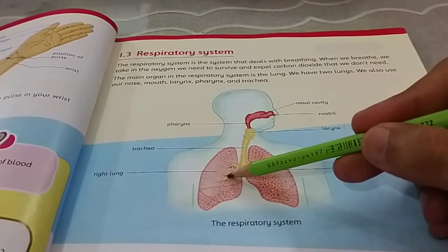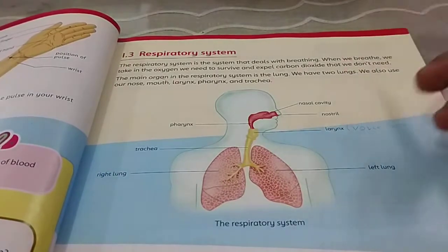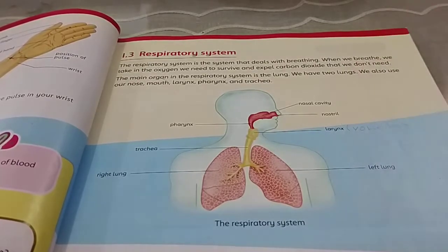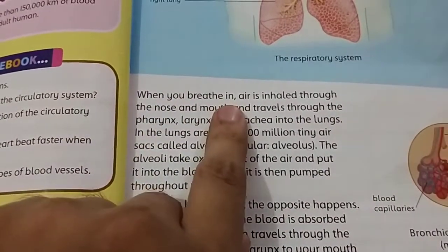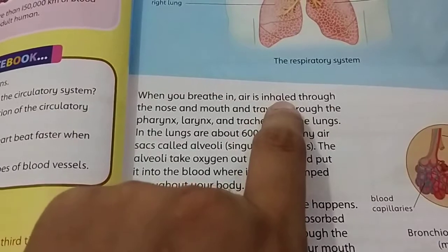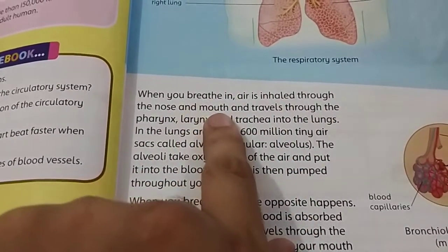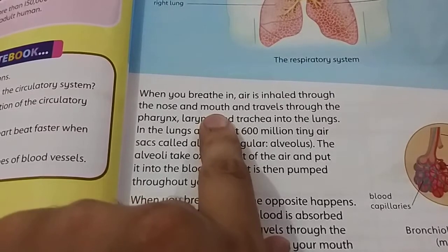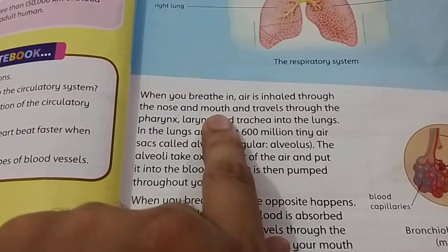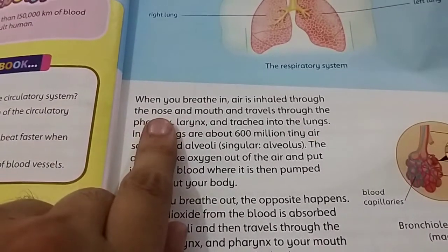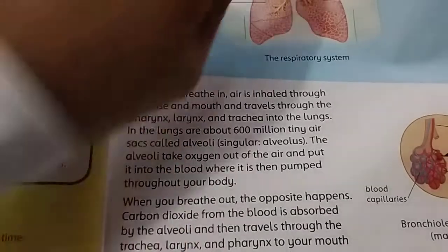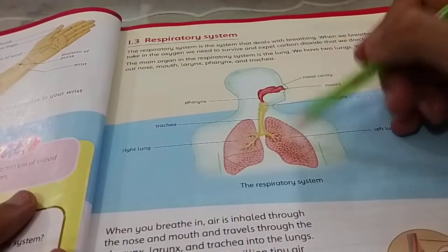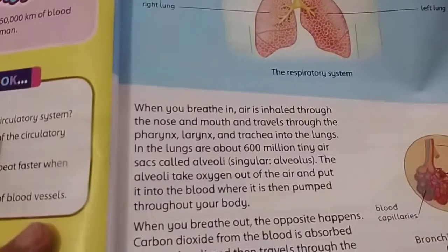Inside the lungs there are tiny sacs — they are known as the alveoli. Think of them like tiny shopping bags. When you breathe in, air is inhaled through the nose and mouth. We should always breathe through our nose because it is equipped with special hairs that catch dust particles. If we breathe through our mouth, dust particles can go directly to our lungs, which is not good.